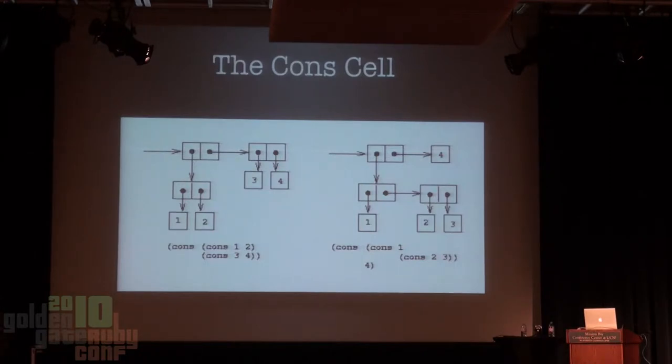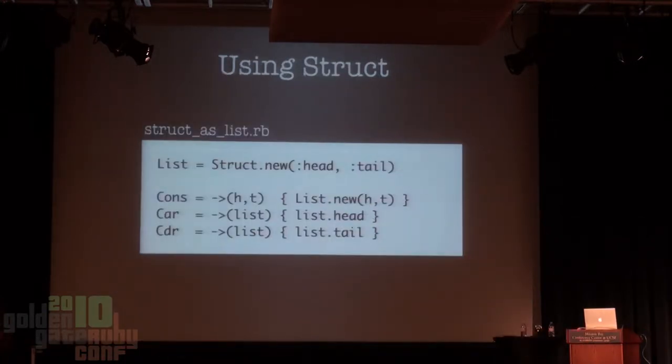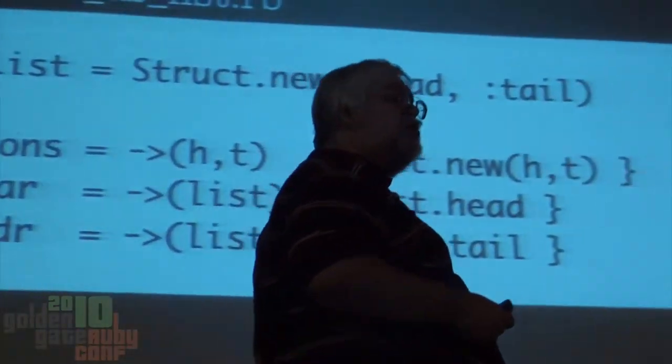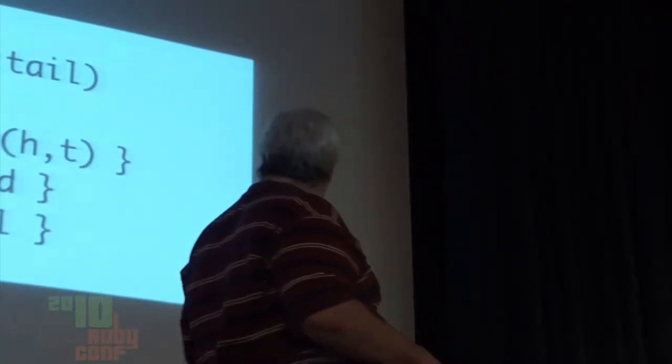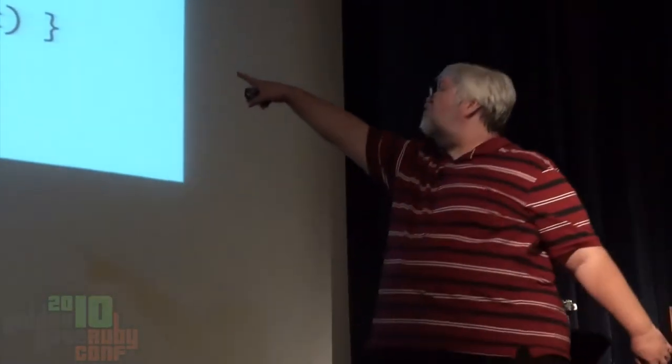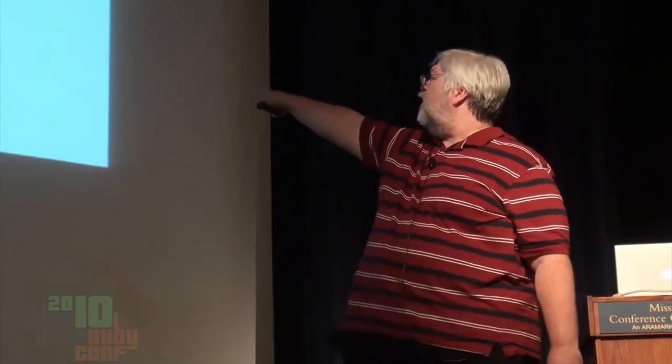If you take a three and cons it onto nil, you get a list of three. If you take two and cons it onto a list of three, you get the list two and three. So cons is building up the list. Car is about taking apart the list and giving you the head. Cdr is about giving you the tail. You can build it up and tear it down using these functions. Cons builds the cell, car gets the head, cdr gets the tail—and you can build arbitrarily complex data structures with this. This is a fundamental data pattern that we can use to build anything we want.